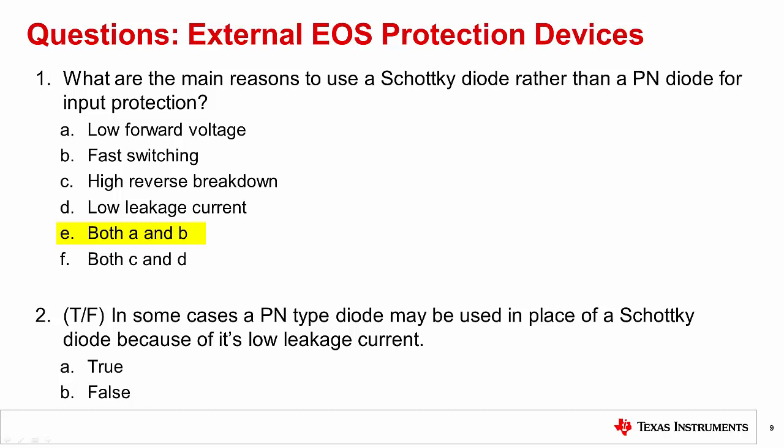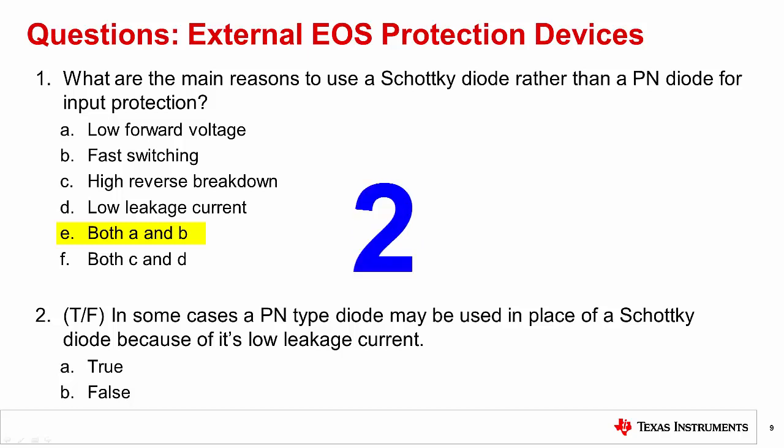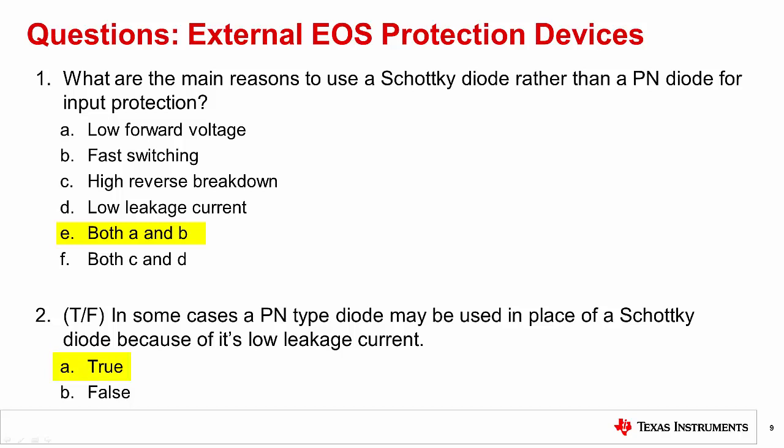Regarding answers C and D: the reverse breakdown is generally lower, and the leakage is generally higher on a Schottky than a PN diode. Question two, true or false: in some cases, a PN type diode may be used in place of a Schottky diode because of its low leakage current. The correct answer is A, true. Although PN diodes have a higher forward breakdown, they are sometimes used in protection circuits when low leakage current is required.